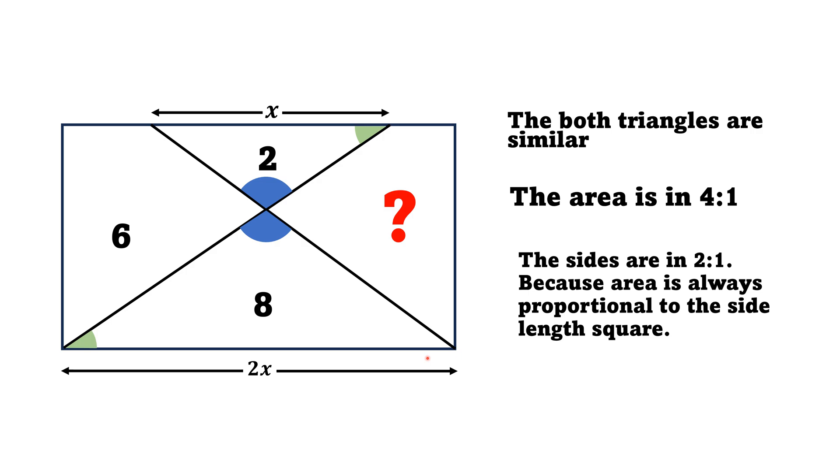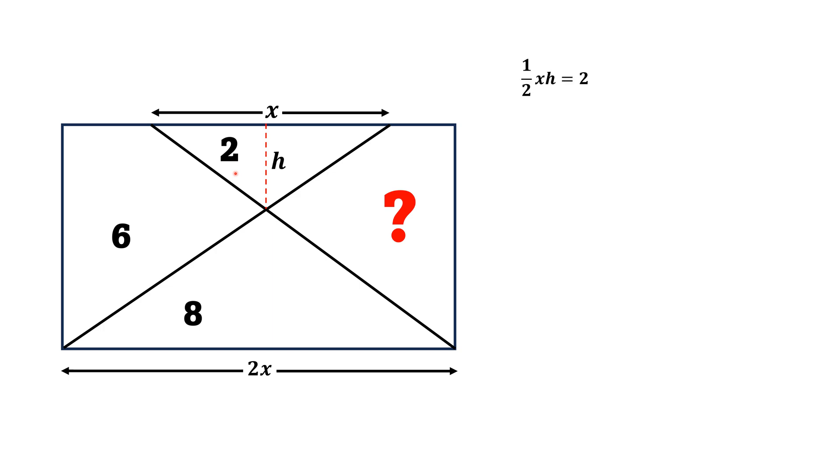If we draw a perpendicular to this triangle and call it h, then the area of this triangle will be ½ times xh, and that is equal to 2. So if we multiply both sides by 2, we will get xh = 4.